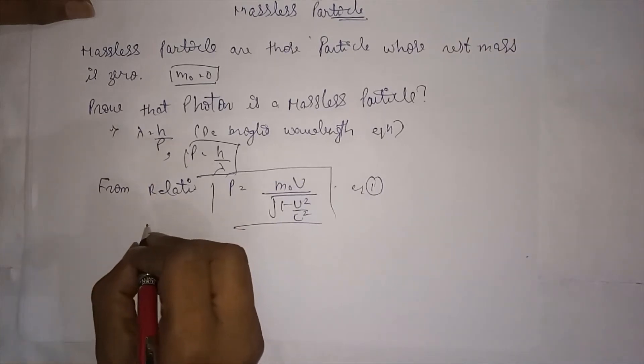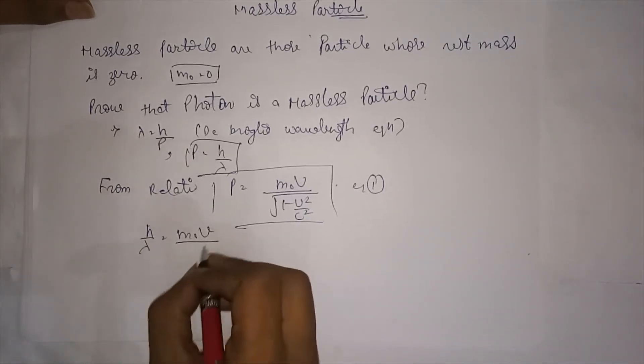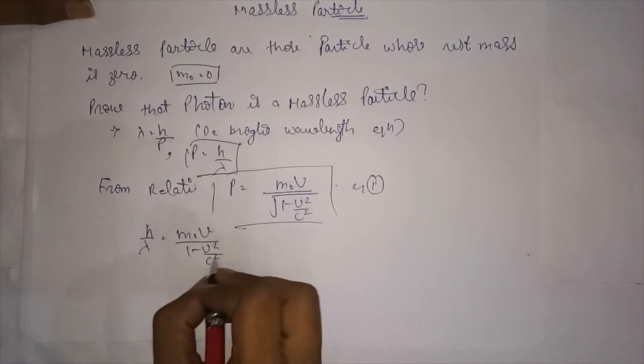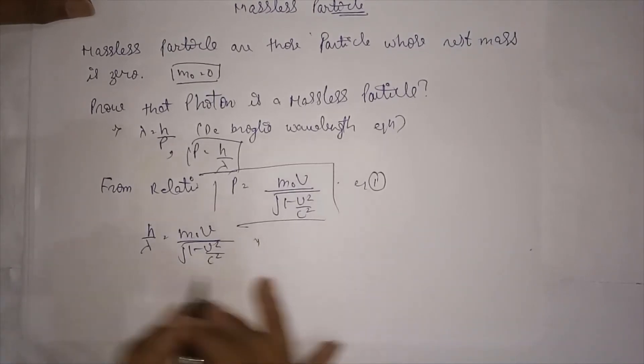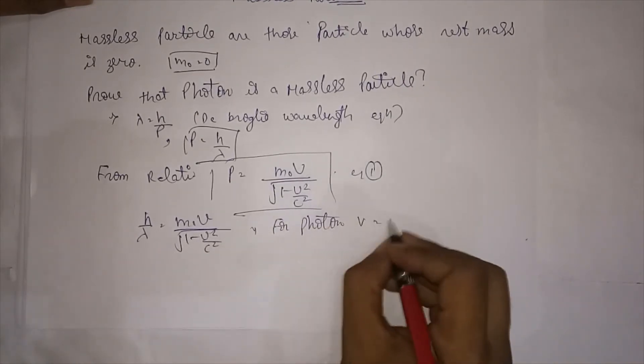We get h upon lambda is equal to m0v upon under root 1 minus v square upon c square. And we know that for photon v equal to c.